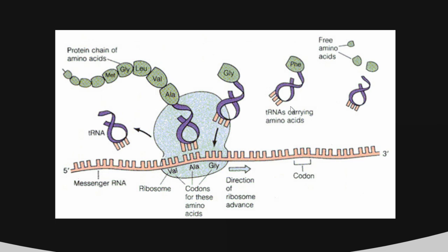Sometimes we call this a charged transfer RNA — it's got an amino acid attached to it. One of the reasons we need to eat proteins in our diet is so that we have free amino acids floating around, broken down from other proteins. We can charge our transfer RNAs so they have the ingredients needed to build new proteins.